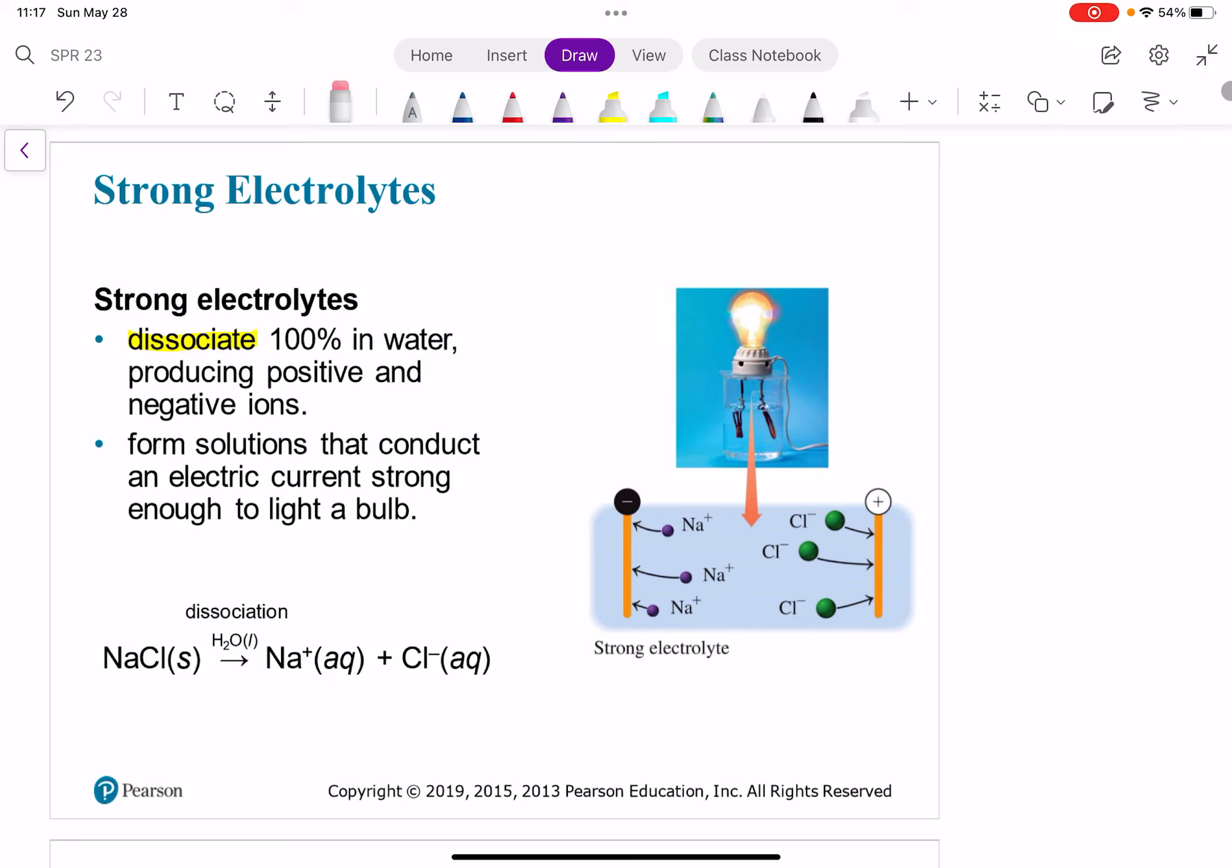So it's a strong electrolyte, NaCl, because it dissolves. It breaks up into those two different ions. And it happens that these strong electrolytes form solutions that conduct an electric current strong enough to light a light bulb. So you can see that over here. Here's an example of that there. So these strong electrolytes conduct electricity really well.